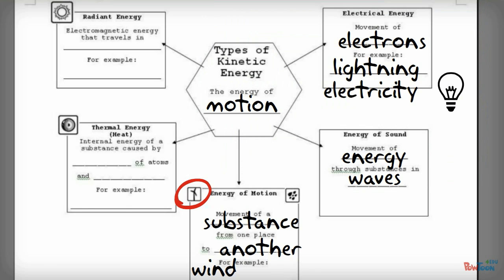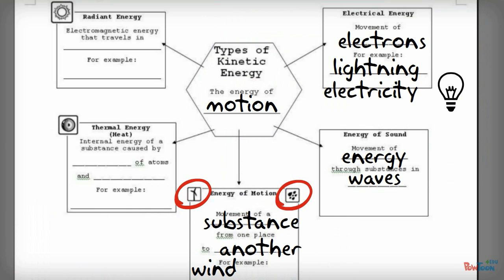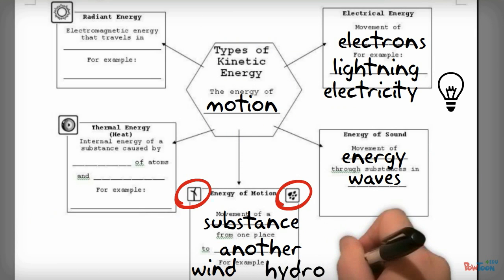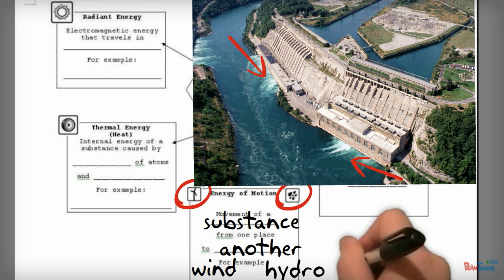And this little graphic here, some water droplets, are talking about something called hydropower, which converts the energy of moving water into electricity. And these are all things that we will be looking into a little bit more later in class.